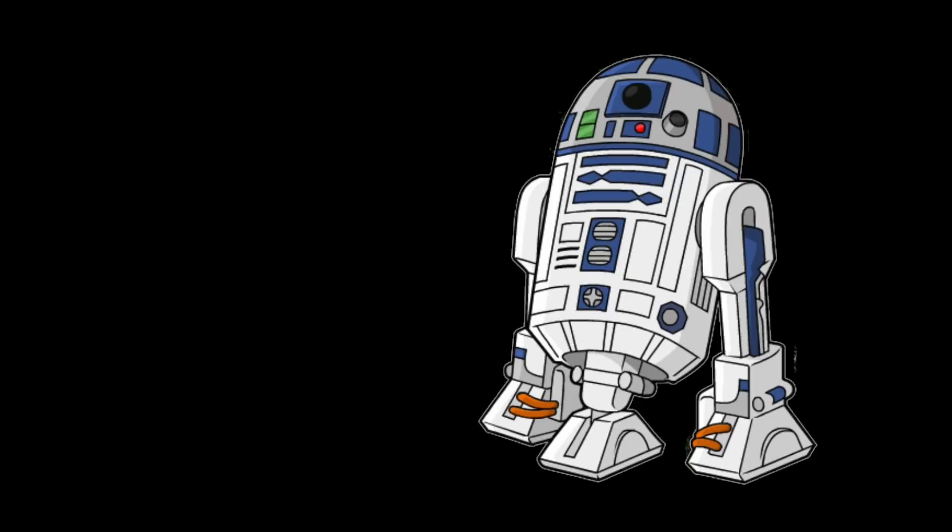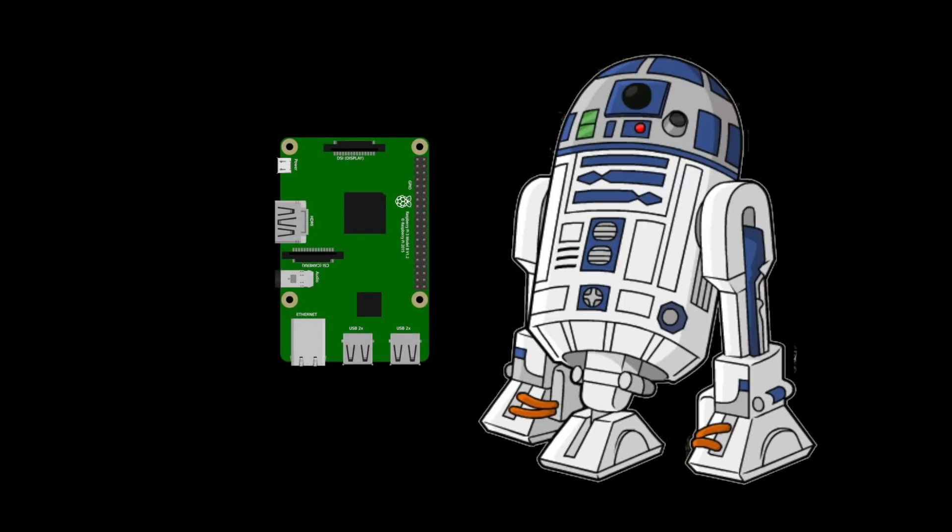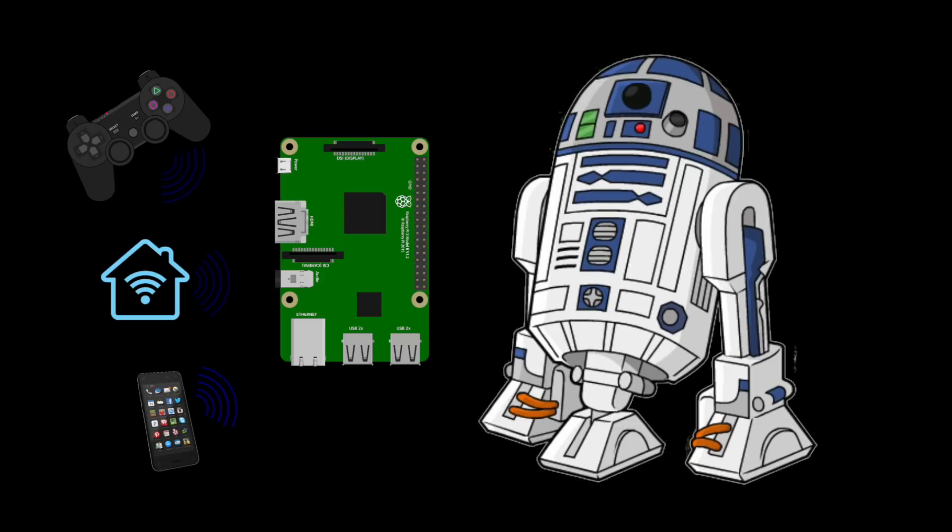Let's talk about how this control system is put together. First we start with the Raspberry Pi. This is where my astromech core software runs. It has all of the subroutines and functions and monitors everything within the R2-D2. It also handles all input devices such as the PS3 controller, my home automation system, or a smartphone app.